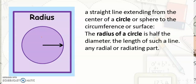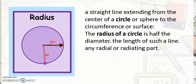The next one would be the radius. Radius is a straight line extending from the center of a circle or sphere to the circumference or surface. The radius of a circle is half the diameter. So this part is the radius, and this part can also be the radius. When we say the length of this radius is 3 meters, this part is also 3 meters since the radius is equidistant. So the radius is the length from the center to the edge of a circle.